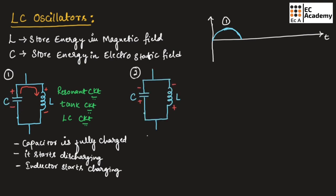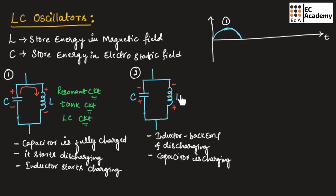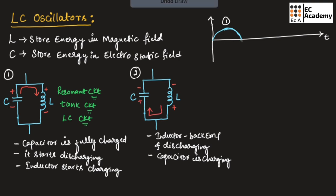In the second step, the inductor will produce back EMF and starts discharging, and the capacitor will start charging. The polarity across the inductor will change — initially positive and negative, now it changes to negative and positive. Since the polarity across the capacitor has changed, the capacitor will charge in the opposite direction.